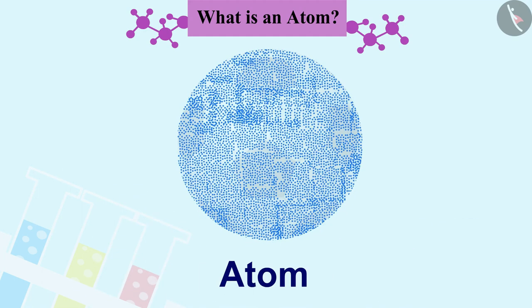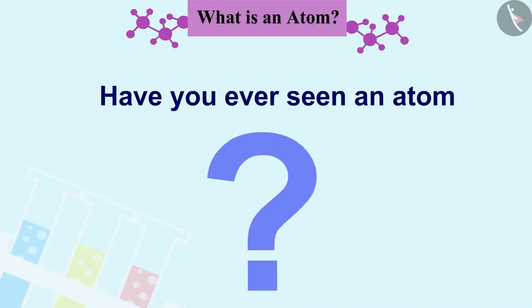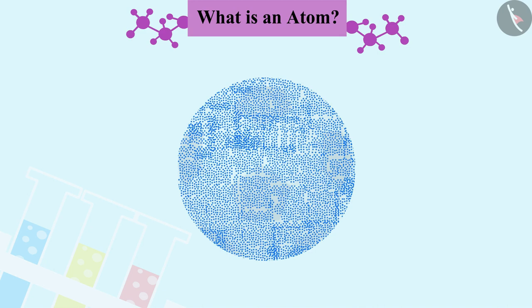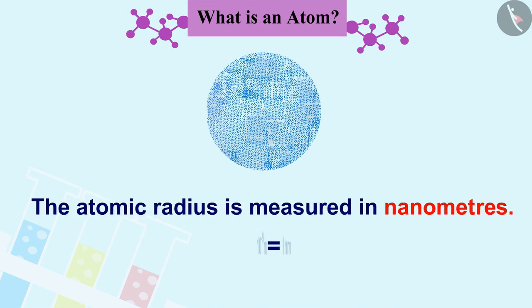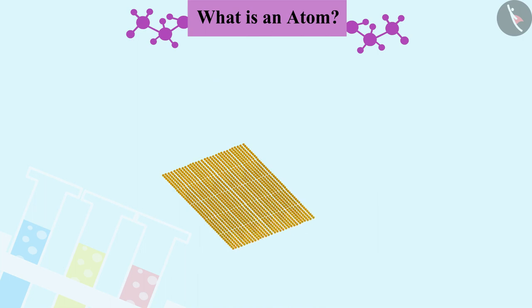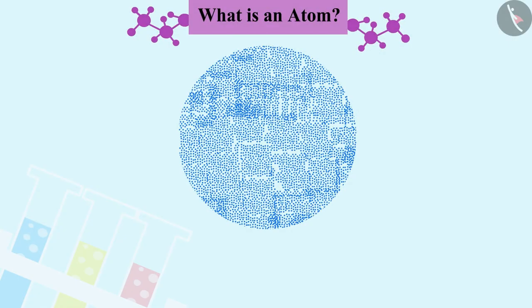Have you ever seen an atom? No, but why? Because they are so small we cannot imagine or even compare. The atomic radius is measured in nanometers. When millions of atoms are placed on top of them, a layer as thick as a sheet of paper will be able to form.